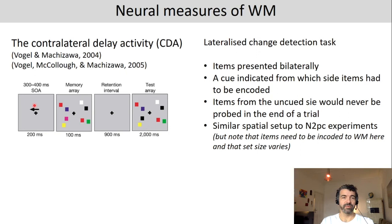As a neural measure of working memory capacity, the contralateral delay activity — or CDA — in the EEG signal and the event-related potential (ERP) has been predominant in the last decade or longer. The N2PC is a contralateral negativity to targets, and the CDA is similarly calculated but has a longer latency. The CDA, as a lateralized component, needs to be measured in a lateralized version of the change detection task.